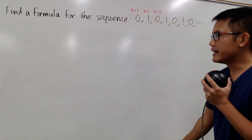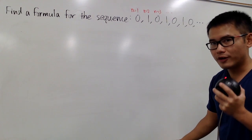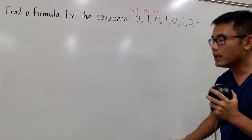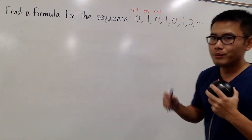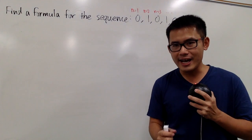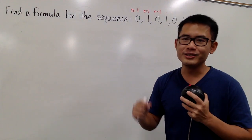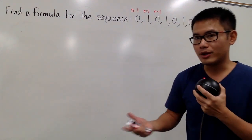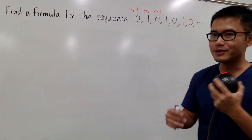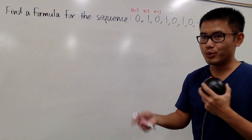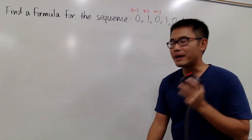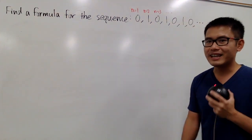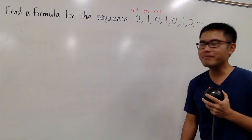Here's the idea: whenever we're trying to write a formula for any repeating sequence, most of the time we can just use sine or cosine, because those are periodic functions, so they're going to produce a repeating sequence. But in this case, we can avoid using that as well, and let's do that first.